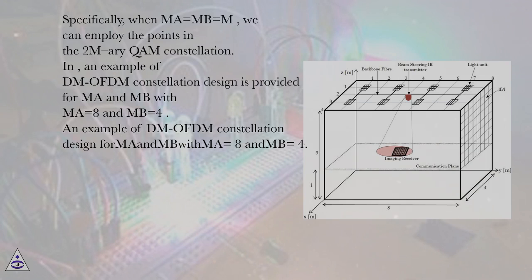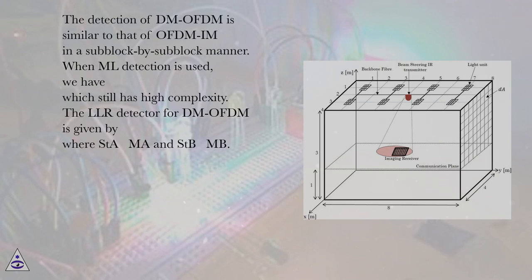An example of DM-OFDM constellation design for MA and MB with MA equals 8 and MB equals 4. The detection of DM-OFDM is similar to that of OFDM-IM in a subblock-by-subblock manner.